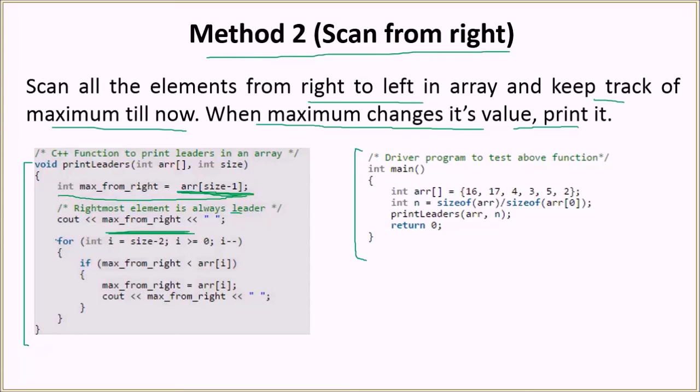After we are done with this, then we run a loop from size minus two. Note that the element at size minus one has already been processed. So we start from size minus two till the zeroth index. And then we check if the maximum from right is smaller than the current element. If the maximum from right is smaller than the current element, then we update the maximum from the right with the current element and then we print it because that has to be a leader.